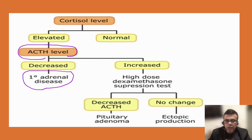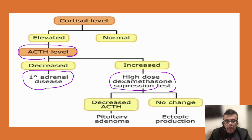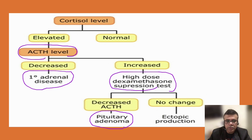If ACTH is increased, we perform a high-dose dexamethasone suppression test. We administer a high dose of dexamethasone and then measure ACTH and cortisol levels. If this causes a decrease in ACTH and cortisol, it is indicative of pituitary adenoma, because exogenously administered dexamethasone mimics cortisol's negative feedback and suppresses pituitary ACTH secretion.